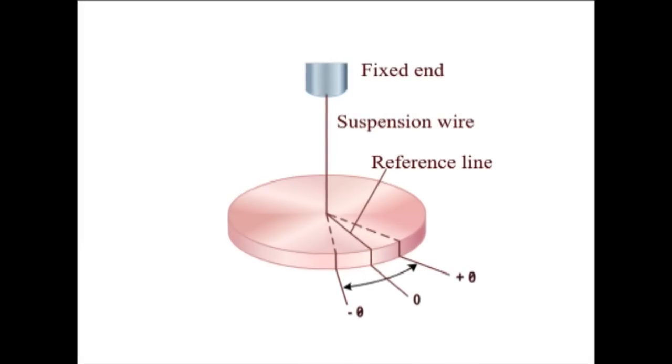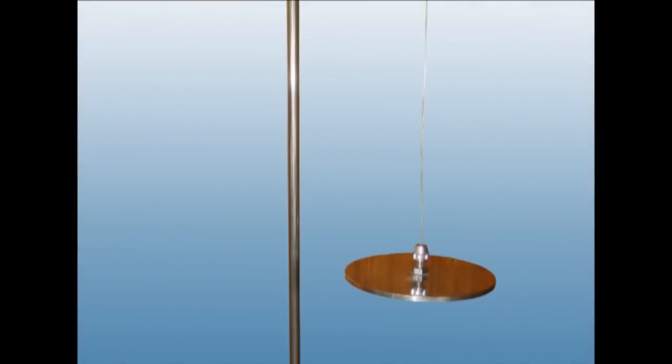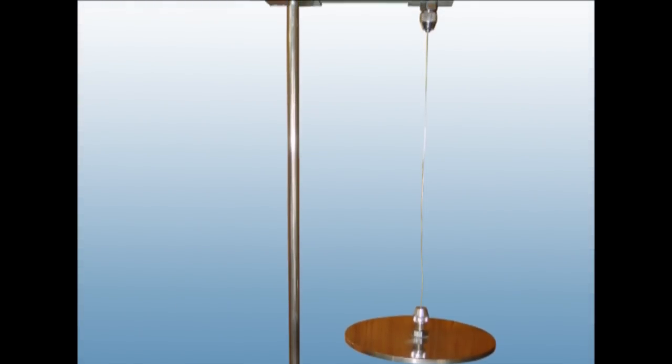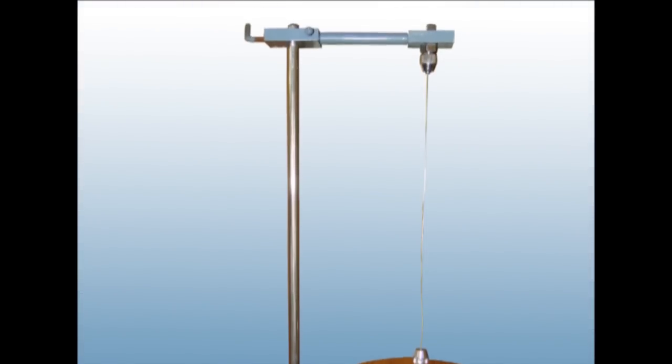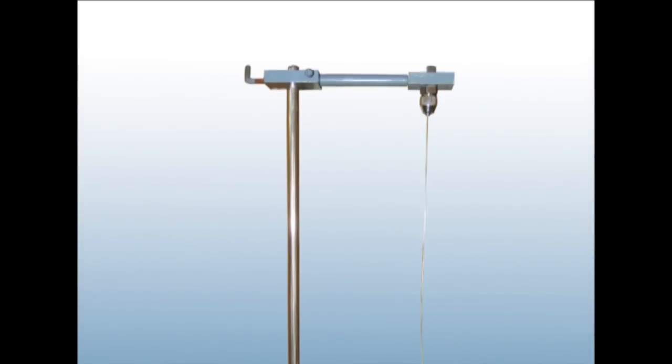Such an oscillation is called torsional oscillation. A torsion pendulum consists of a massive disc or cylinder or dumbbell suspended by a thin uniform wire which is firmly fixed to a rigid support.